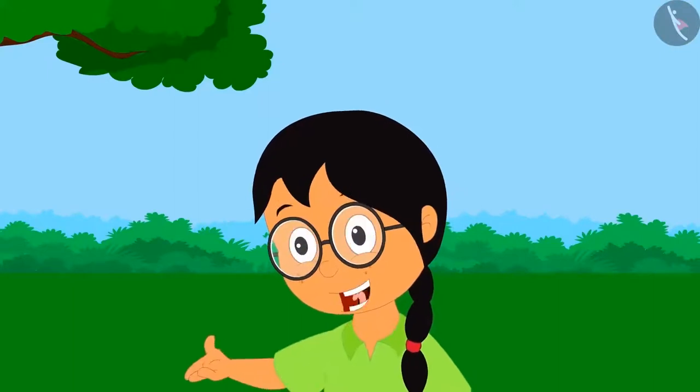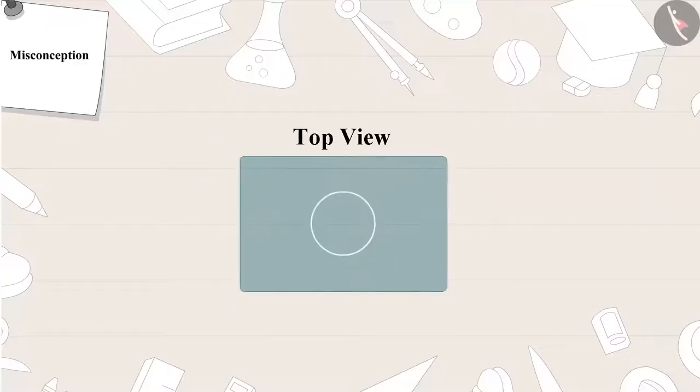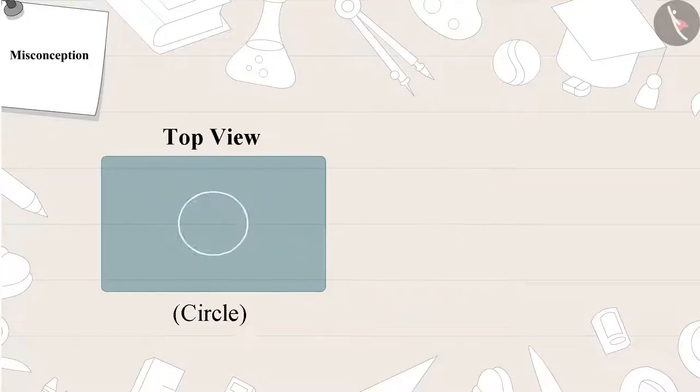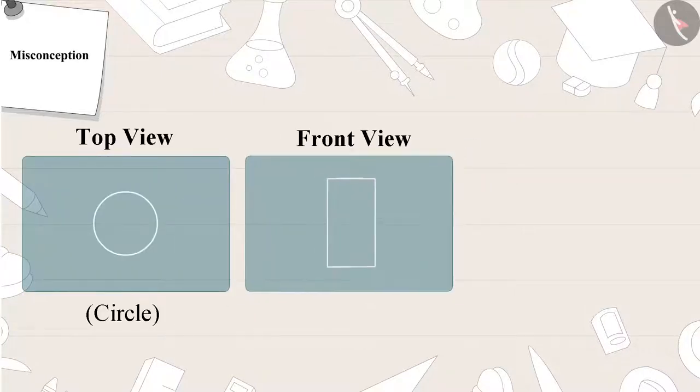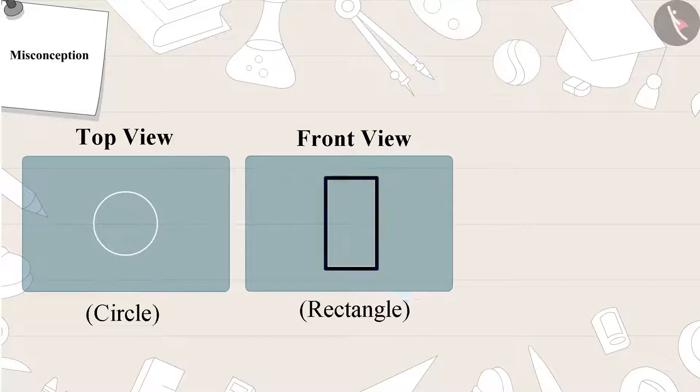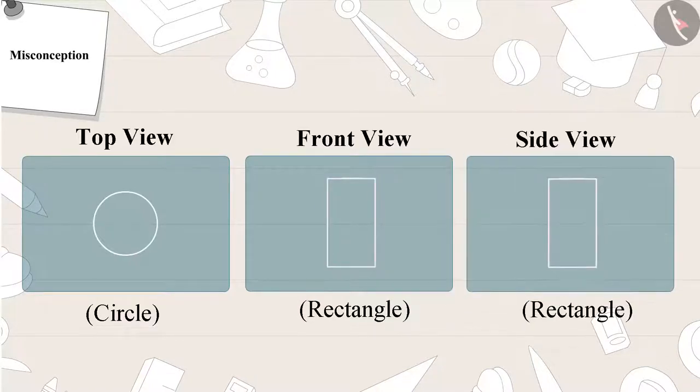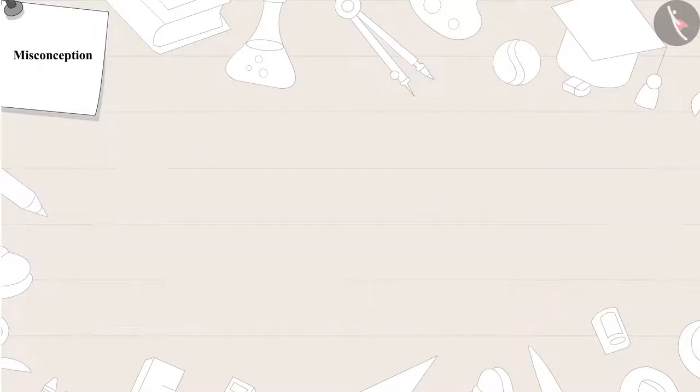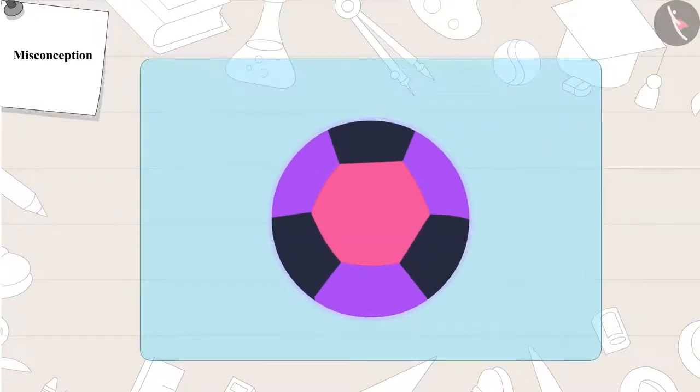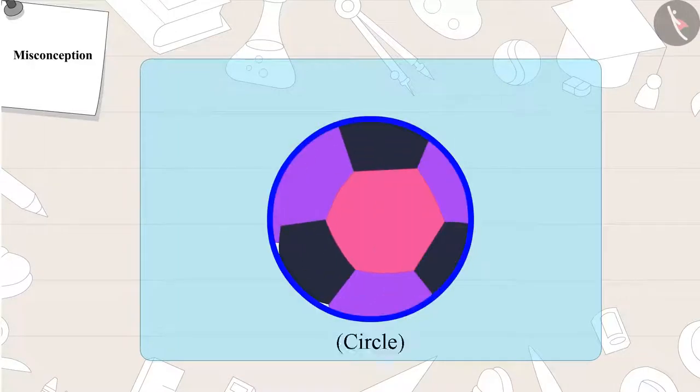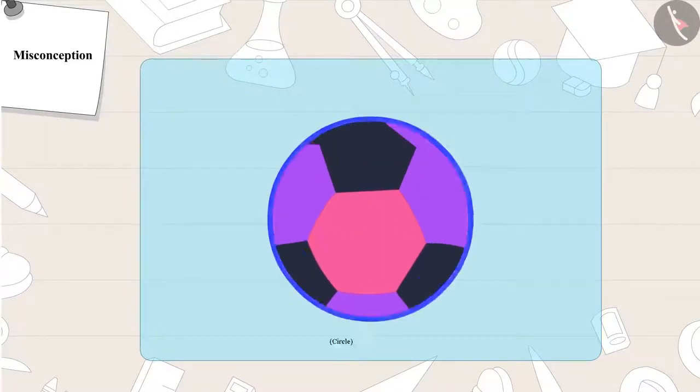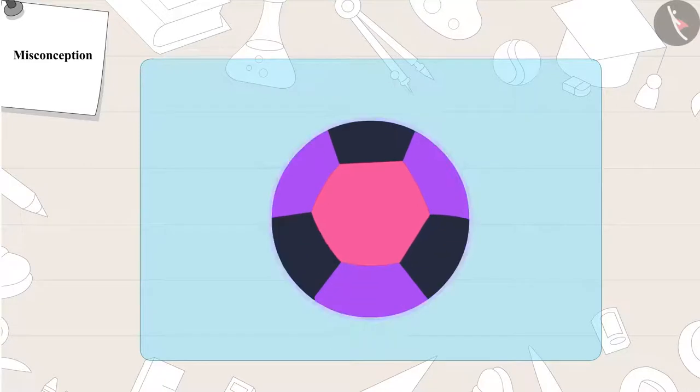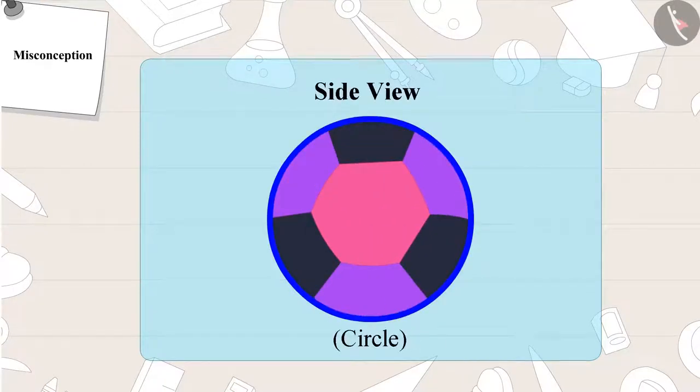This is a wrong answer, Gagu ji. A glass is a circle only in top view. It is a rectangle in front view and side view as well. The correct answer is a ball. A ball is a circle in front view, top view as well as side view.